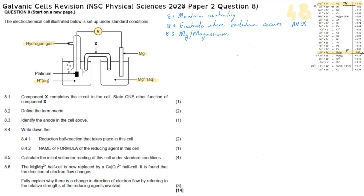Question 8.4.1 asks for the reduction half reaction that takes place in the cell. The reduction half reaction is the hydrogen half reaction. We always read reduction half reactions from left to right on the table, giving us: 2H⁺ + 2e⁻ → H₂. Two hydrogen ions combine with two electrons to form hydrogen gas.